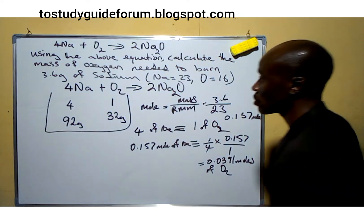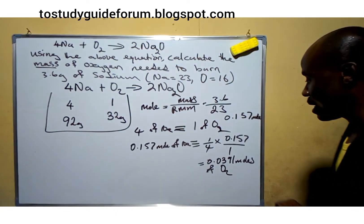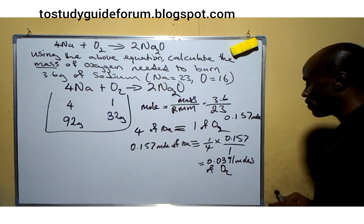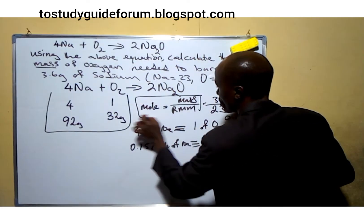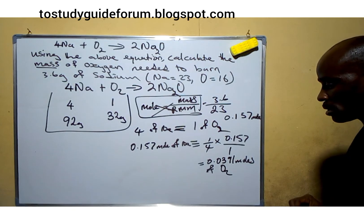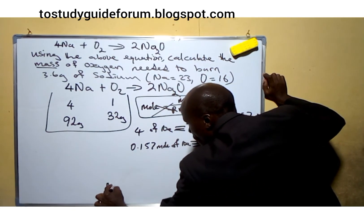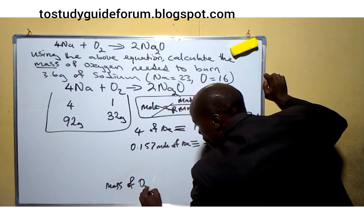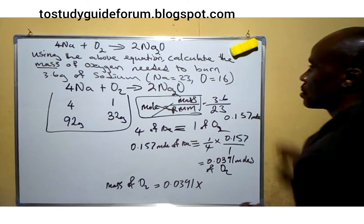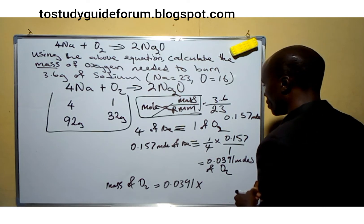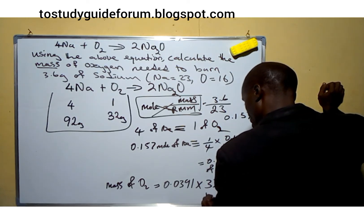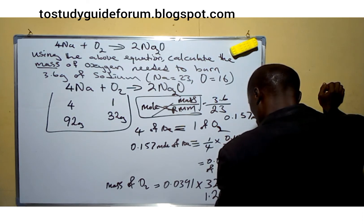But this is not the final answer the question requires — we are looking for the mass. So because we are looking for the mass, we need to convert. We find the mass equivalent by using: mass equals moles multiplied by relative molecular mass. So the mass of oxygen would be 0.0391 times 32, which gives us 1.23 grams of oxygen.